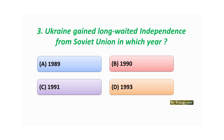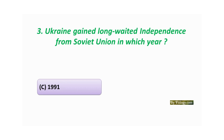Question number three: Ukraine gained long-awaited independence from the Soviet Union in which year? Option A: 1989. Option B: 1990. Option C: 1991. Option D: 1993. The correct answer is Option C: 1991.